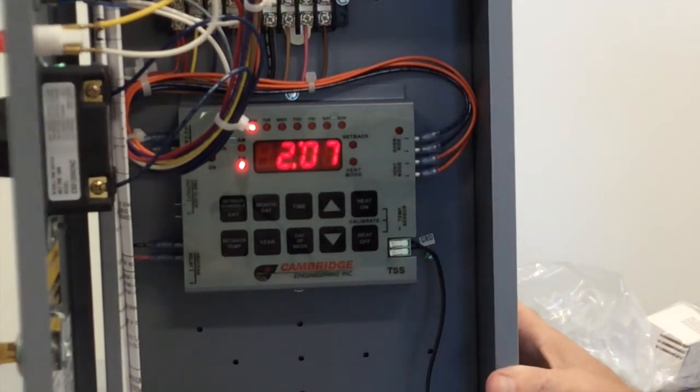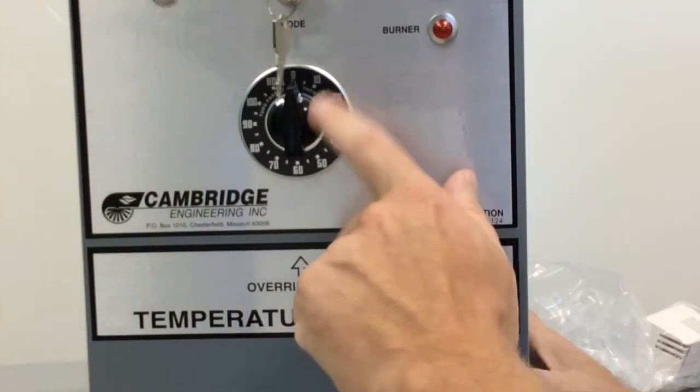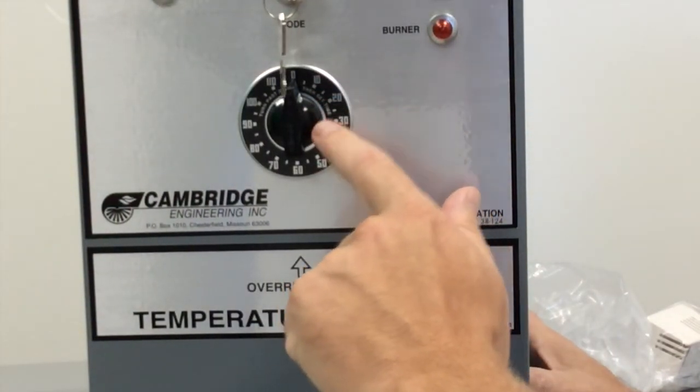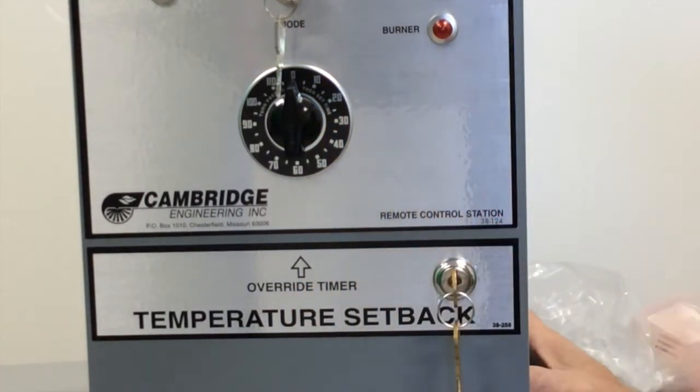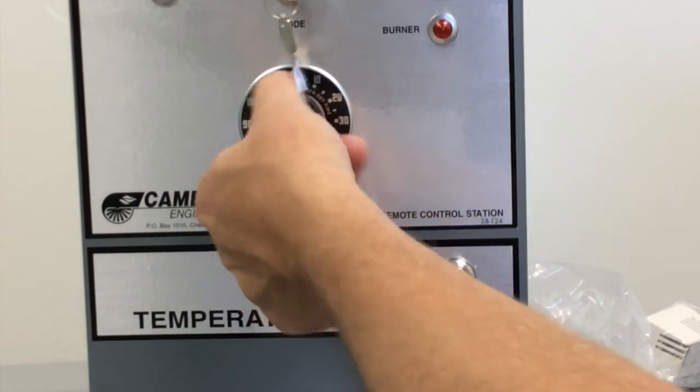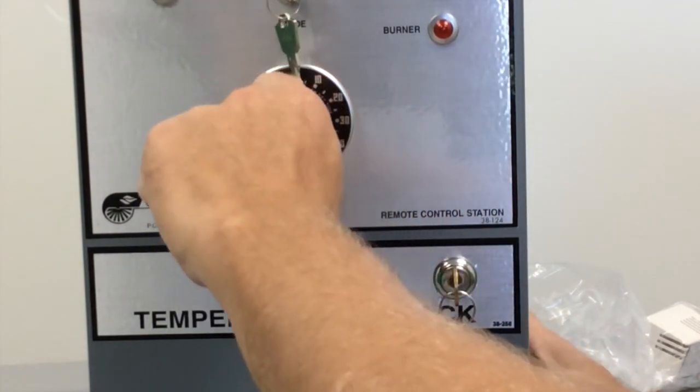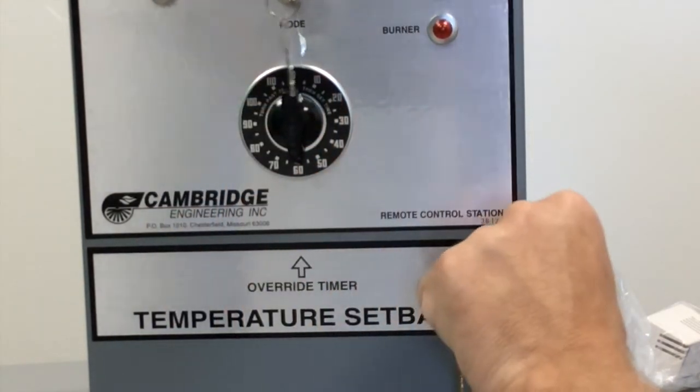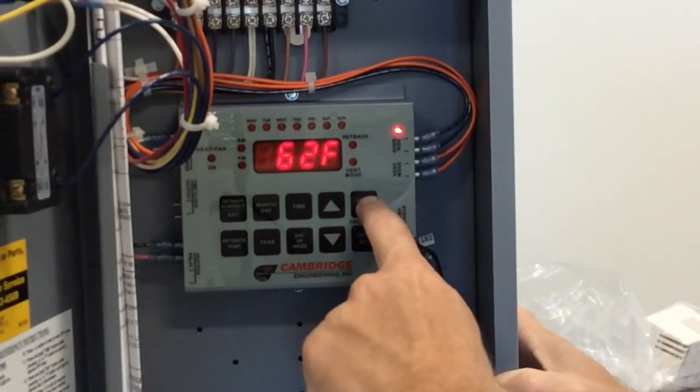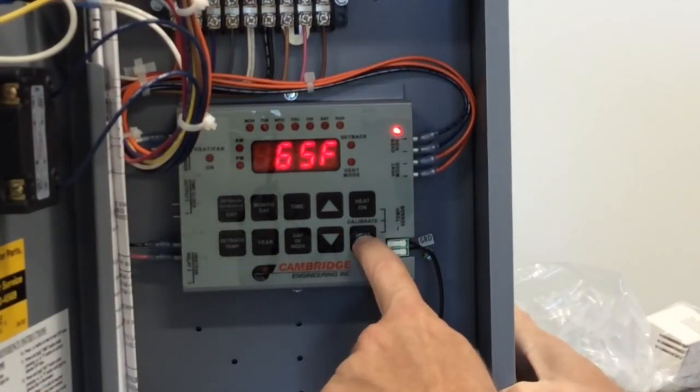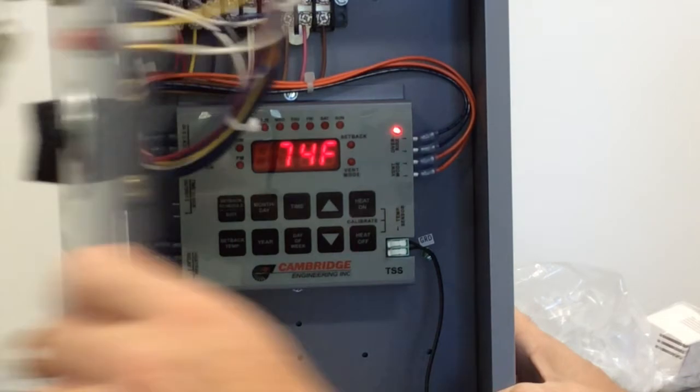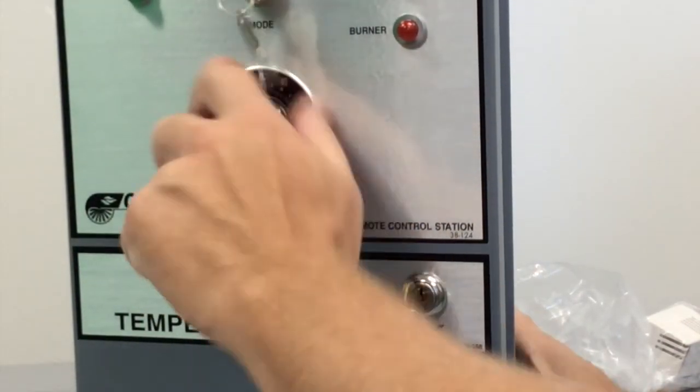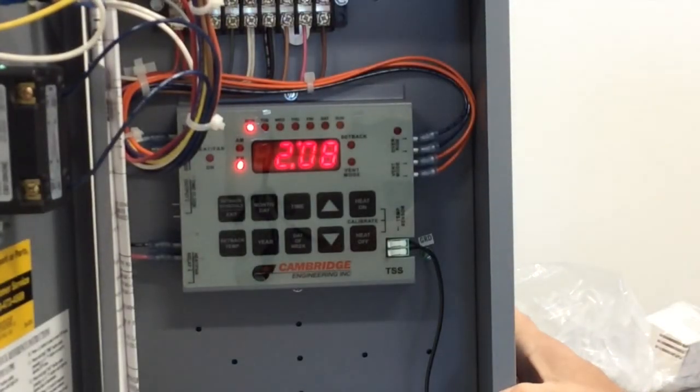Now once again, when you're in the occupied mode, this override timer will do nothing for you. A lot of folks believe that the override timer forces the heater on no matter what. That is not the case. Whenever you turn this override timer, let's just say, for instance, here this is one hour, it's going to bring you back to your 62, 65 until the timer expires. Then once the timer expires, it puts you back into your setback mode.